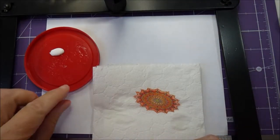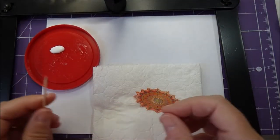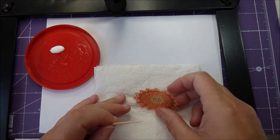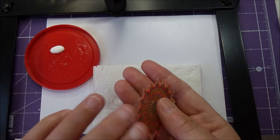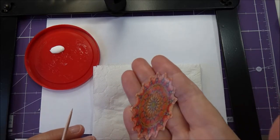Now the decal is dry. I'm going to use some PVA glue. Apply it to the shiny side of the decal, which is the underside.